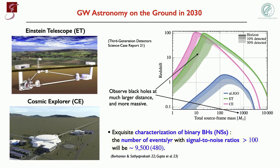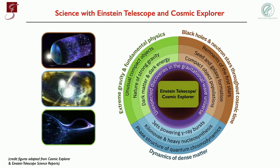It's overwhelming to think about the number of detections we will have. In just one year, with a signal-to-noise ratio one order of magnitude larger than today, we could see 10,000 black holes — remember, today we are measuring one black hole every three days. We could also see of the order of 500 binary neutron stars with such large signal-to-noise ratio that we could actually pin down the composition of the neutron stars. The science case of the Einstein Telescope and Cosmic Explorer is truly overwhelming, touching on probing gravity and Einstein's theory, fundamental physics, understanding how black holes and neutron stars form, and understanding the dense matter at the core of neutron stars.